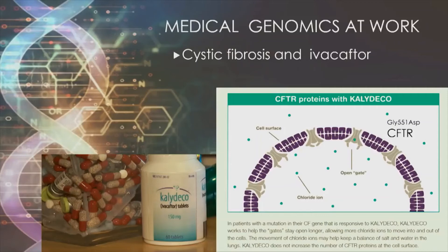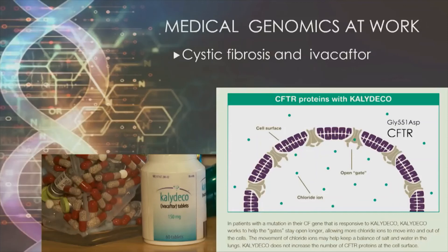One of the most common mutations responsible for cystic fibrosis is an amino acid substitution — an aspartic acid substituted for a glycine at position 551 in the CFTR protein. A small molecule called IVACAFTOR was identified that interacts with the proteins in the membrane gate to make this gate more easily opened by the cell, allowing the cell to control movement of molecules in and out of it and correcting the defect for cystic fibrosis.